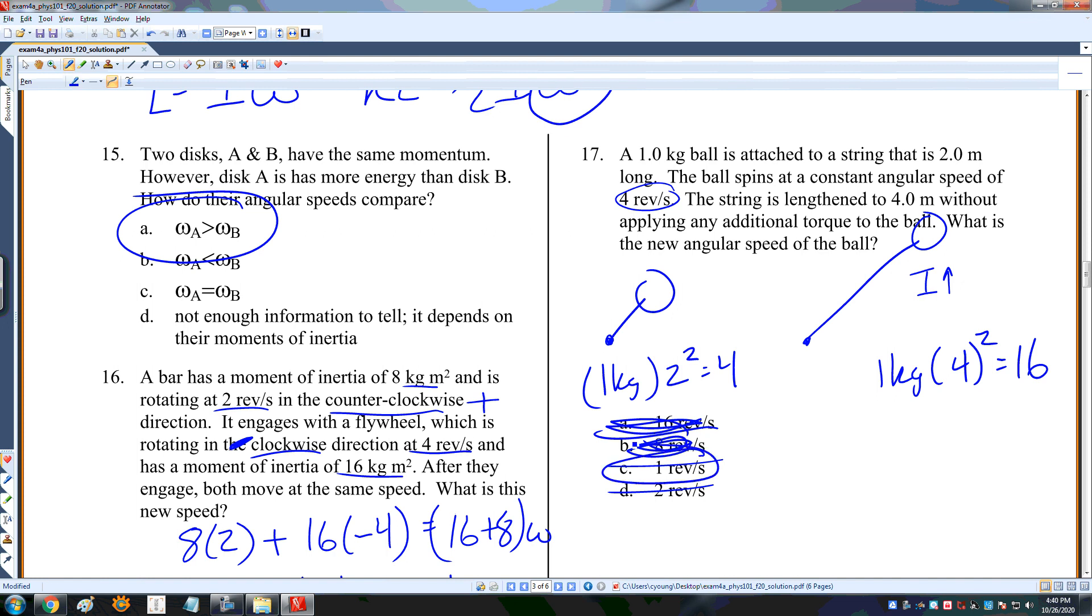If I'm uncertain, I can just do I omega equals I omega, and have 4 times the original speed, which is 4 revolutions per second, equals 16 times omega. So omega equals 1 revolution per second. That's problem 17.